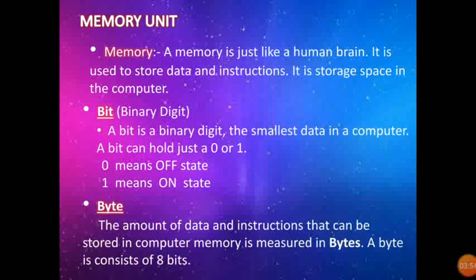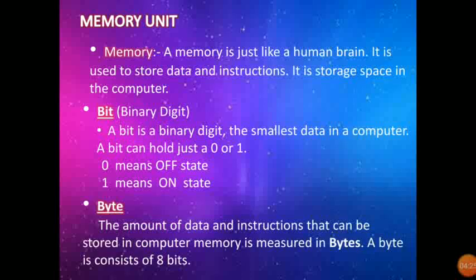Now, what is a Bit? Bit is a binary digit. A bit is the smallest data in a computer. A bit can hold just a 0 or 1 — these are called binary digits. 0 means off state, 1 means on state. 0 means negative and 1 means positive.